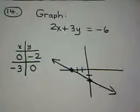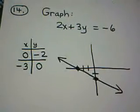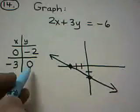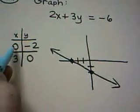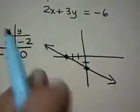So one way to graph that line is by using the intercept method. In other words, making up a table and putting zeros once in for x, once in for y. A little bit more sophisticated method, which I like my college algebra students to know.